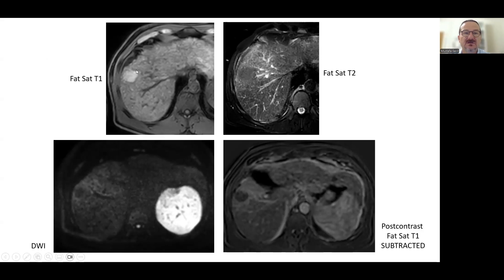This lesion appears bright on T1 because of the iron content, which also makes it hypo-intense on T2-weighted images. The lesion does not display diffusion restriction and no contrast enhancement. As the lesion is bright on T1, we need to use subtracted images to evaluate the vascularity of the lesion.